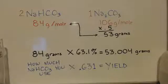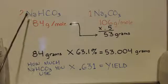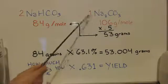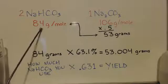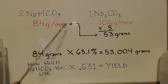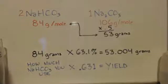If you want an easy way to figure out your stoichiometry, you can do this. Look at this: two of these bicarbonates make one carbonate. One mole of this is 84 grams, one mole of this is 106.